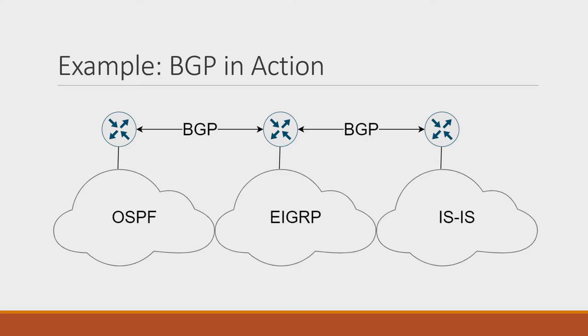Here's a quick visual of what BGP might look like in that scenario. I've put a few different IGPs in this picture because I want to highlight that BGP doesn't care too much about the underlying IGP. In this example, we even have a mix of link state and distance vector routing protocols. BGP provides a common way for these protocols to talk to each other. This diagram could be showing different companies connecting to each other, or a single company using BGP to bridge several IGP domains, maybe as the result of an acquisition or merger.